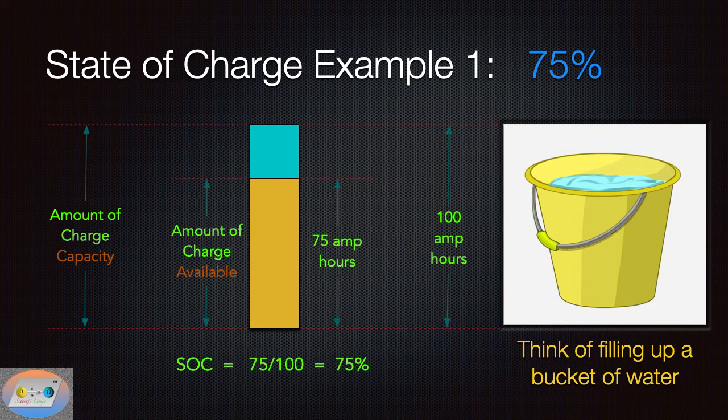So with batteries, whenever you're looking at the state of charge, let's go through a few examples here. Let's say we have a battery with 75% state of charge. We're looking at this diagram. I even include the bucket of water to the right to keep you informed. It's kind of sort of like filling up a bucket of water. So the battery bucket, as it were, is capable of carrying 100 amp hours of charge. However, I only have 75 amp hours of charge in this battery, quote unquote, bucket.